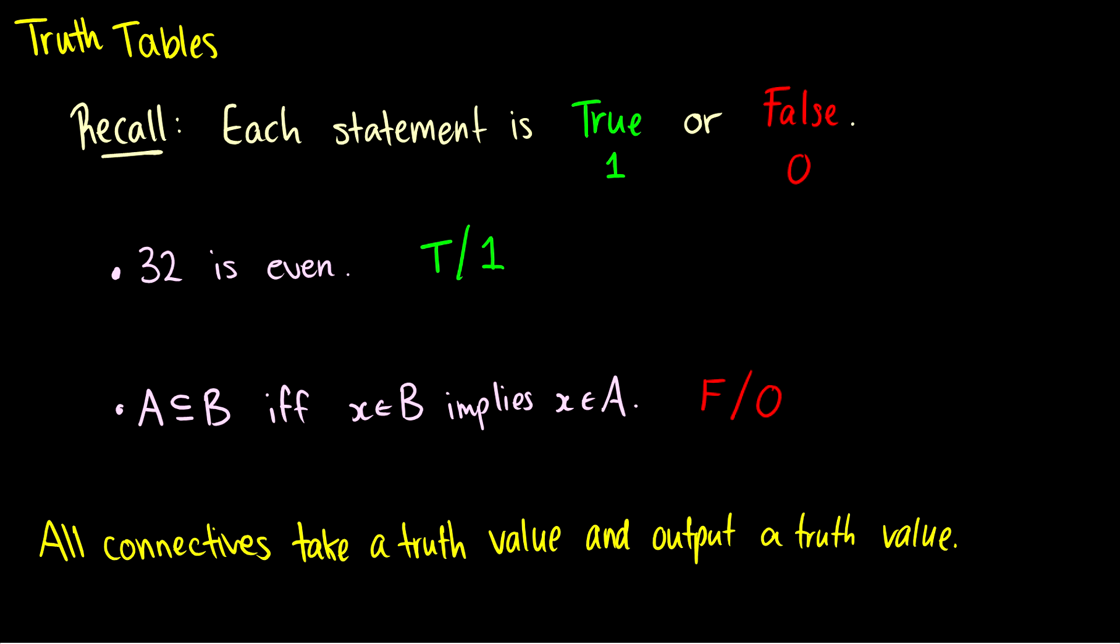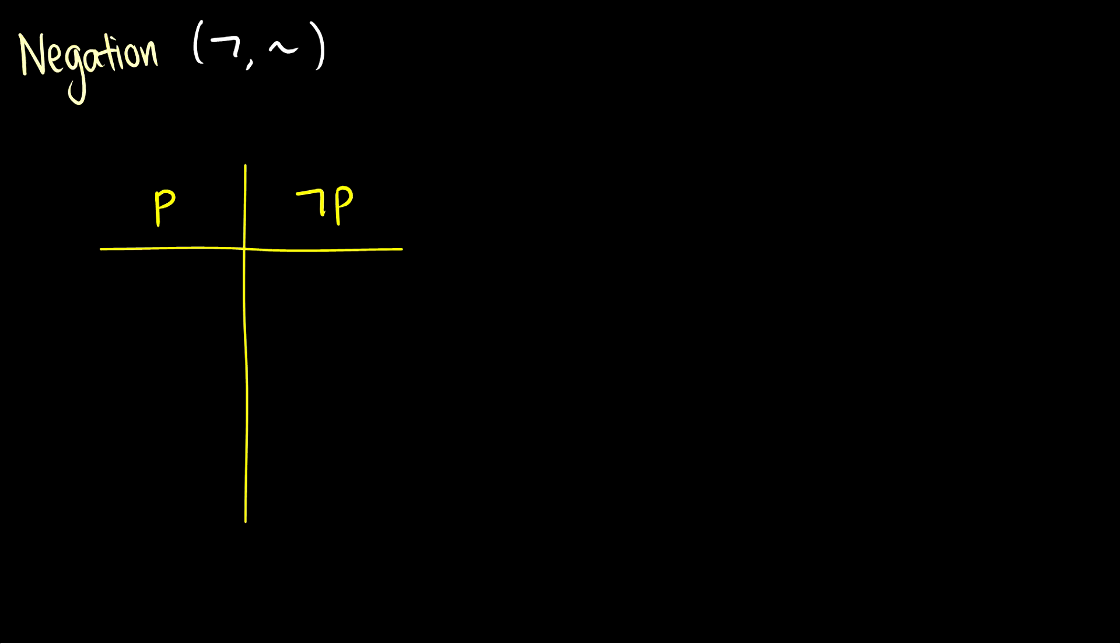These are really specific statements, but what happens if we want to think about truth values for more general statements? For instance, what if we had x is even and we want to think of all possible outcomes? Well, this is what truth tables are for. All connectives take a truth value and output a new truth value, so depending on the connective, the truth values can change.